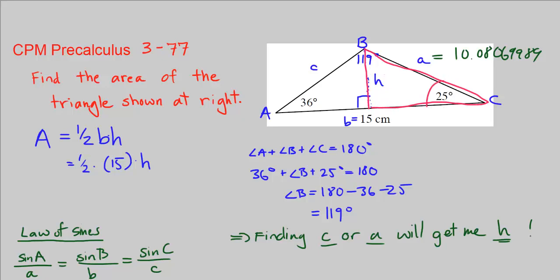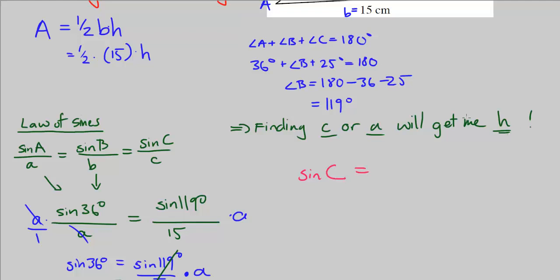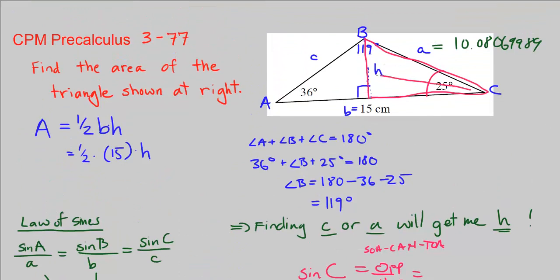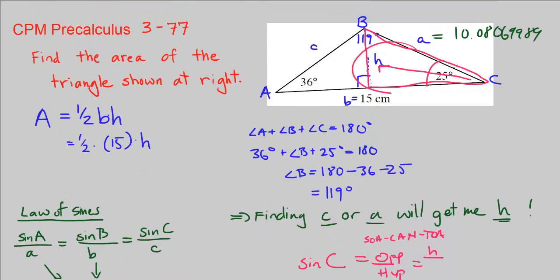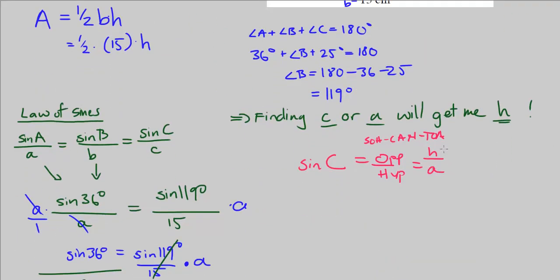I know sine of angle C equals, from SOHCAHTOA, sine equals opposite over hypotenuse, which is h over hypotenuse of this triangle, which is opposite of the right angle here, which is A. So I can solve for h by multiplying both sides by A. They cancel out here, and I'm left with h on the right side, and A times sine of C on the left.